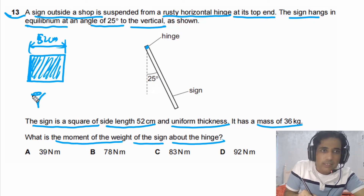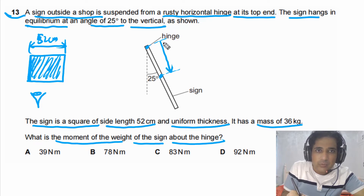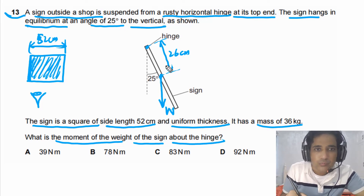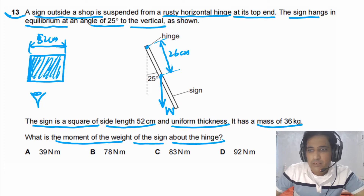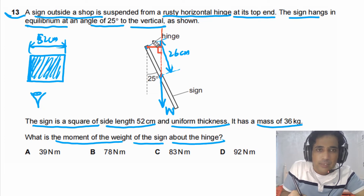The shape of the sign is a square, so each side is equal to 52 centimeters. Since it has uniform thickness, the weight acts at the midpoint of the sign. When viewed from the side, the distance from the hinge to the center is 26 centimeters. We need to find the perpendicular distance between the line of action of the weight and the pivot. This angle is 25 degrees, so the perpendicular distance x equals 26 sine of 25 degrees.